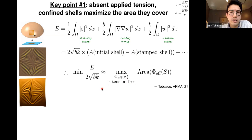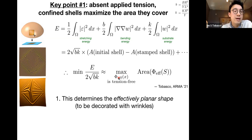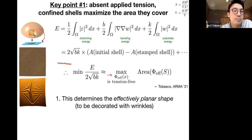The wrinkle pattern is absorbing the loss in area, because any way of stamping the shell into the plane that decreases lengths and is therefore tension-free must also decrease area. To minimize elastic and substrate energy, you should maximize the area covered in the plane — equivalently, minimize the area lost by the pattern. This geometric variational principle claims to determine the effective or homogenized map. In the infinitesimally wrinkled limit, you're talking about in-plane objects that are tension-free.